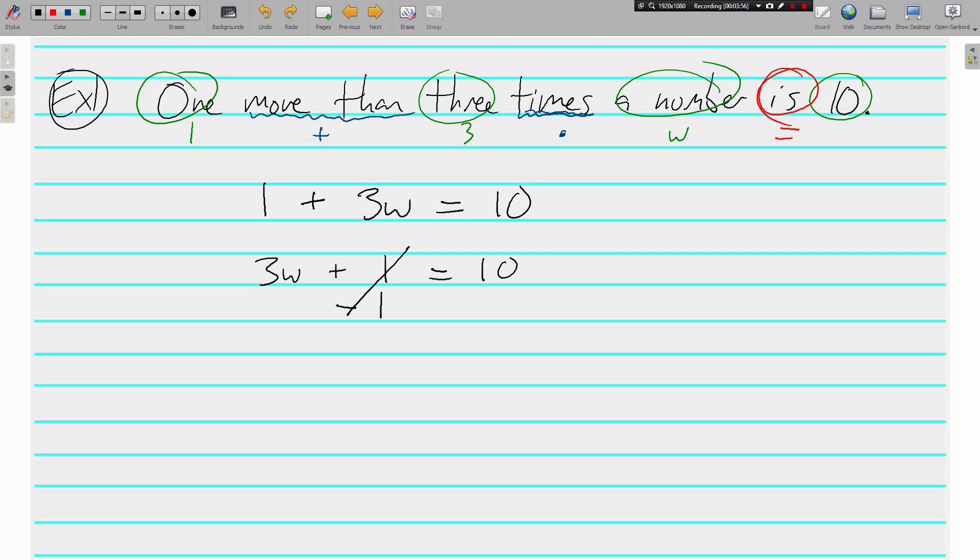We're going to save the term with the variable for last. So first, we're going to get rid of the positive one. How do we undo positive one? With a negative one. And what you do to one side, you must do to the other side. So on the left, we now have 3w, and on the right, ten minus one is nine. And what's happening to w? We're multiplying by three, so we're going to divide by three. What you do to one side, do to the other side. Our solution, w, is equal to three.